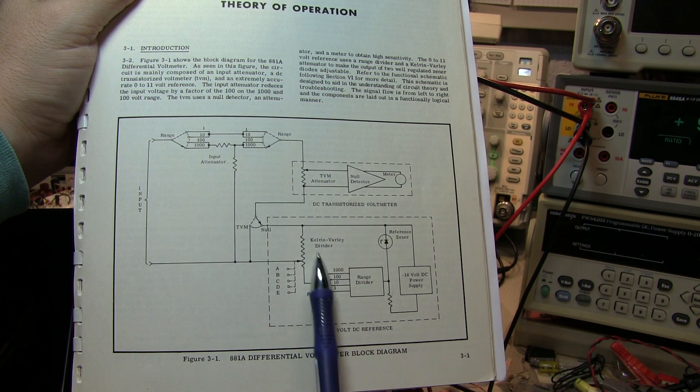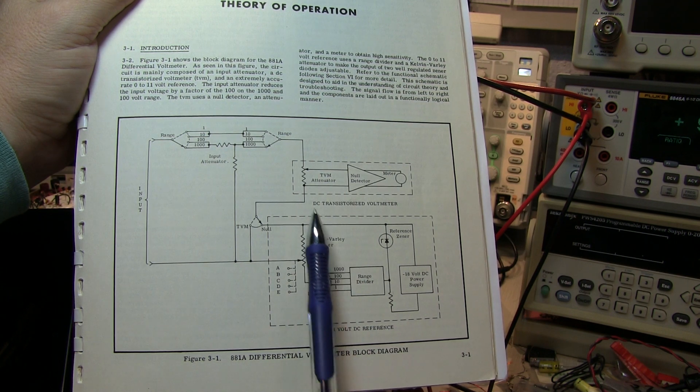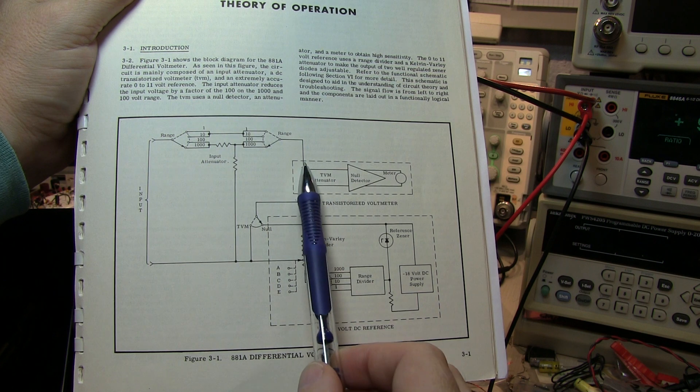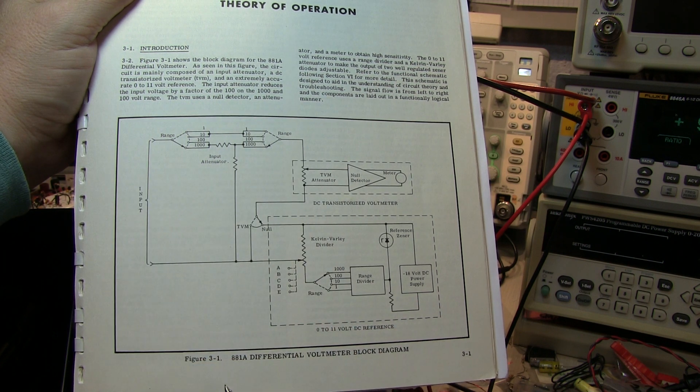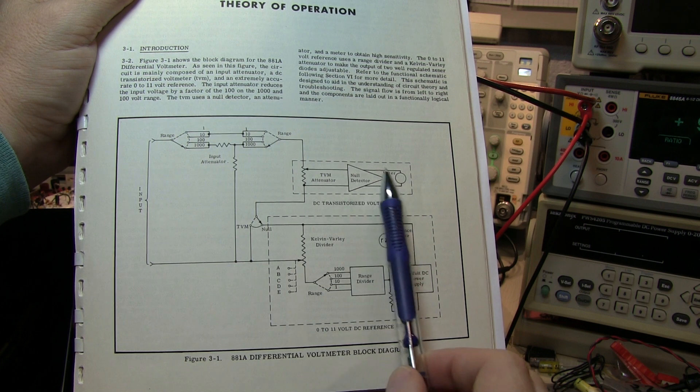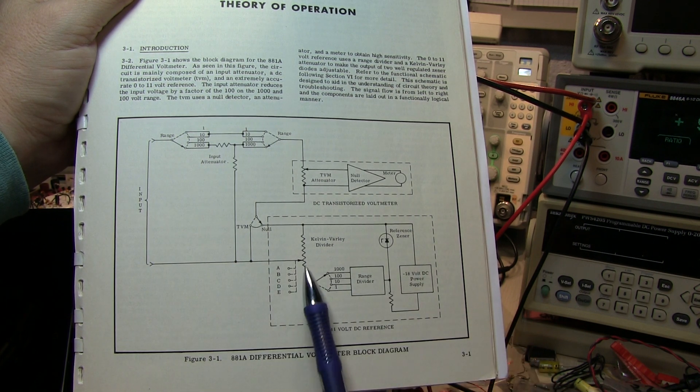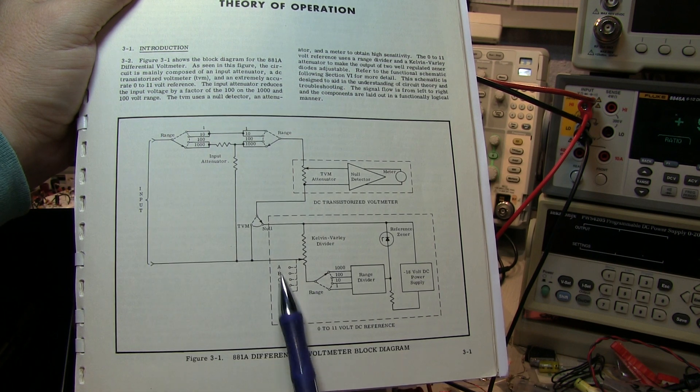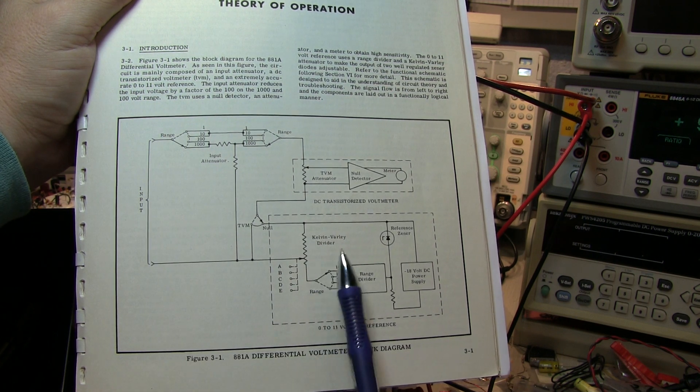What you would do is adjust a Kelvin-Varley voltage divider such that the voltage on one side of the differential voltmeter matched the unknown voltage you were bringing in from the input. When that matched, the null meter would read right at zero, and then you could directly read the voltage on the numeric dials from the Kelvin-Varley divider.